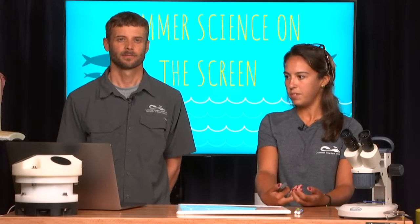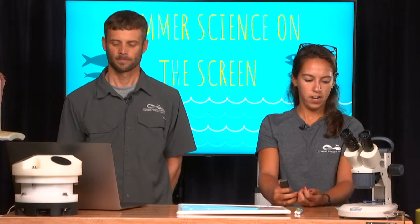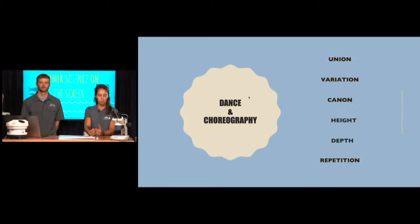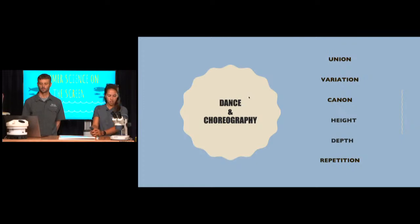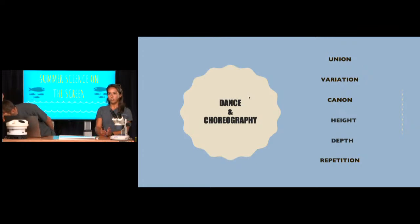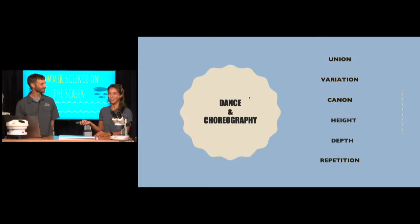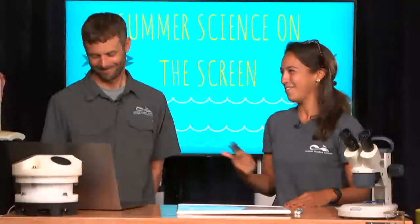While a choreographer could decide to have all dancers come together in unison, they can also use different forms of variation to make the piece more diverse. Each dancer could have mostly the same step sequence except for one step that's different for each dancer. Another way to add variety is for dancers to dance in what they call a cannon — one dancer starts, then three steps in another dancer starts the same sequence — like singing Row Row Row Your Boat with staggered starts.